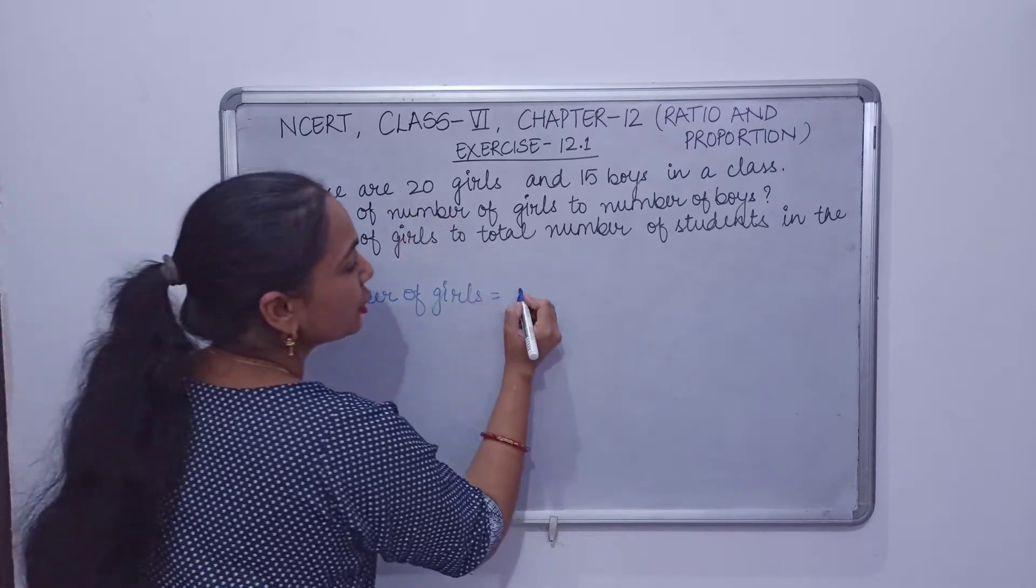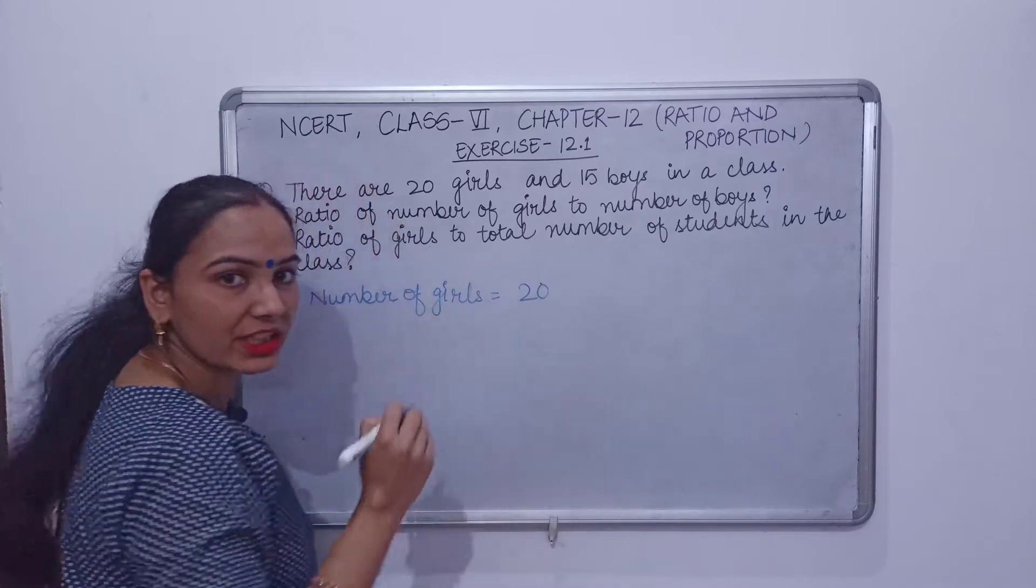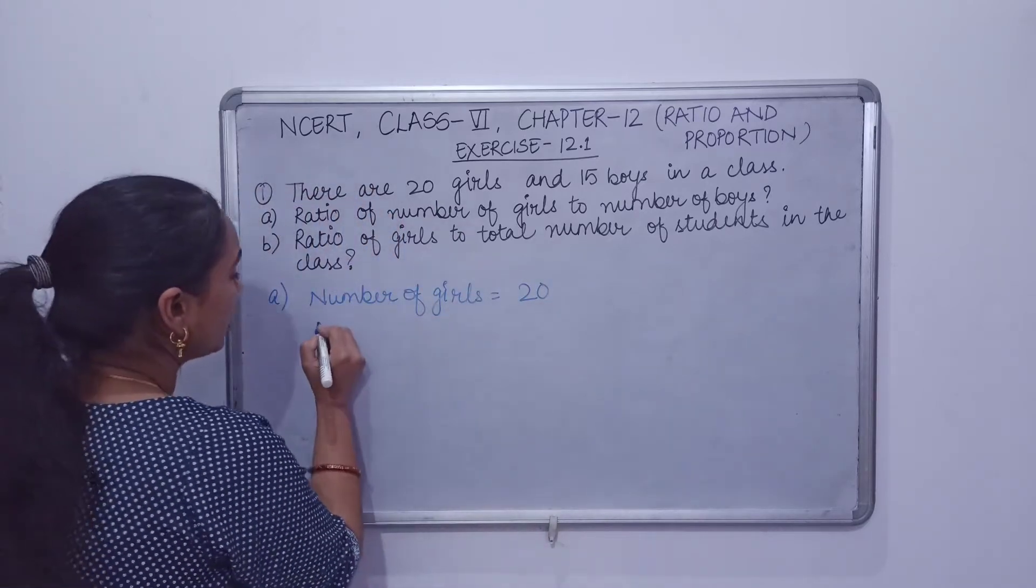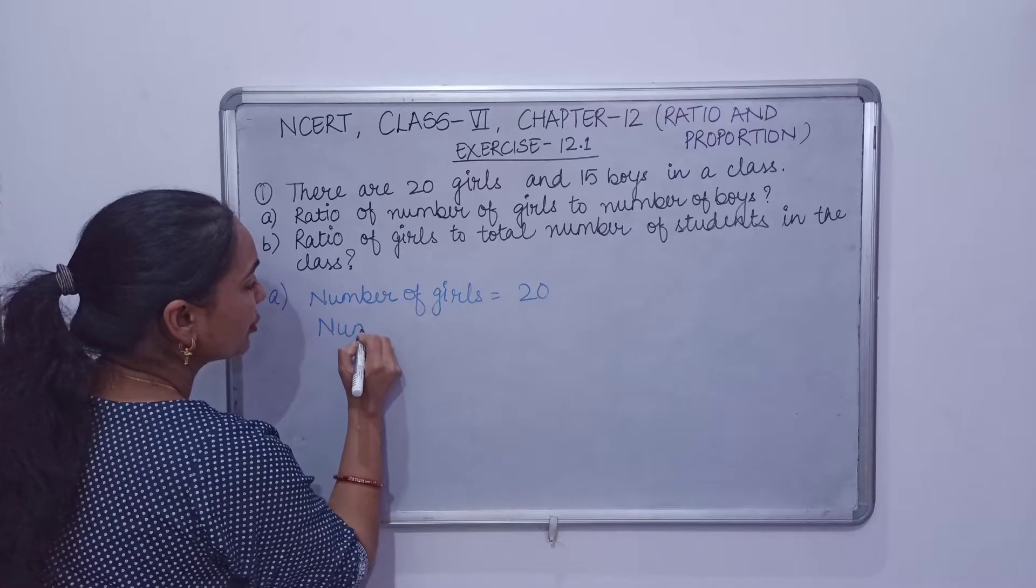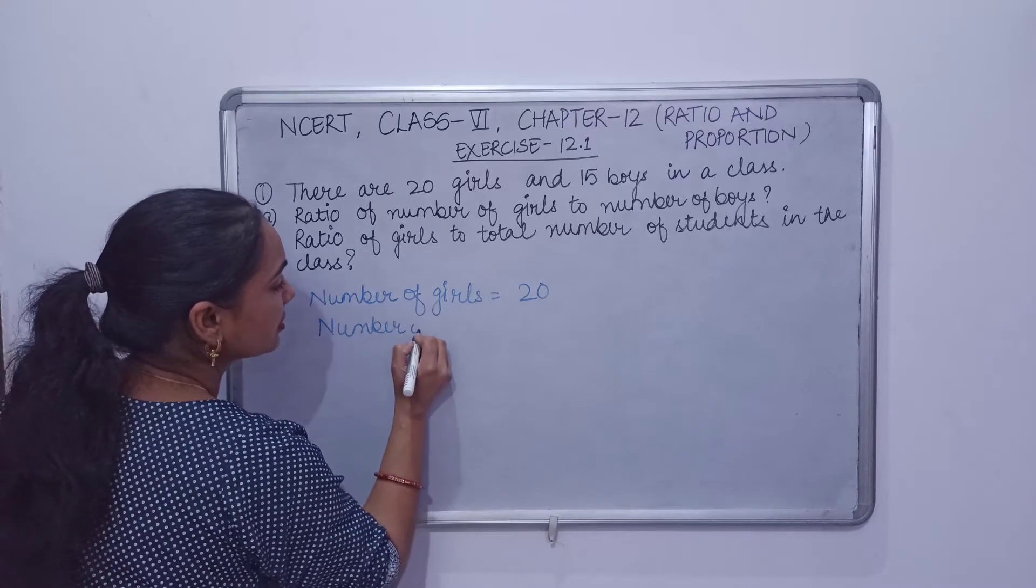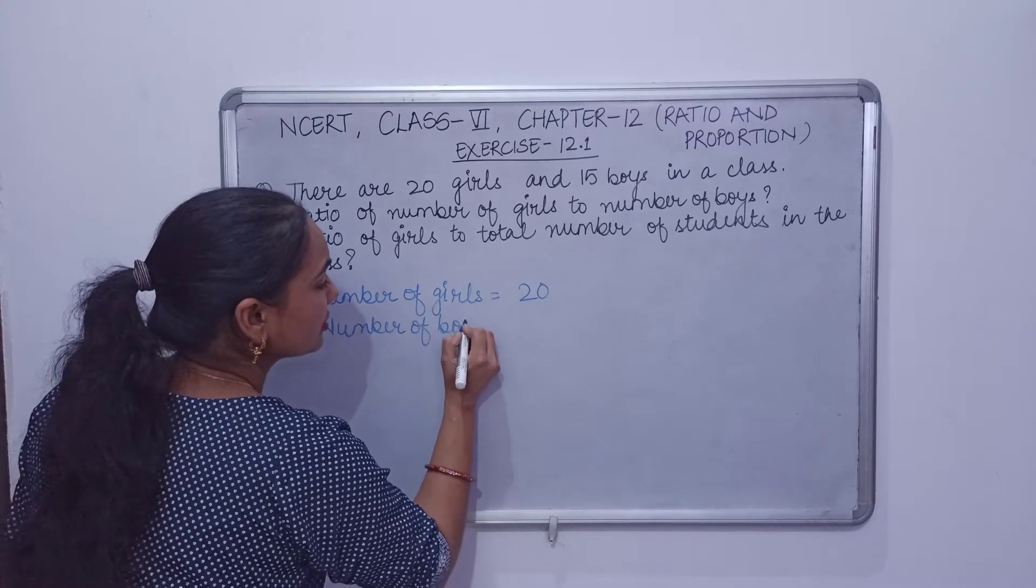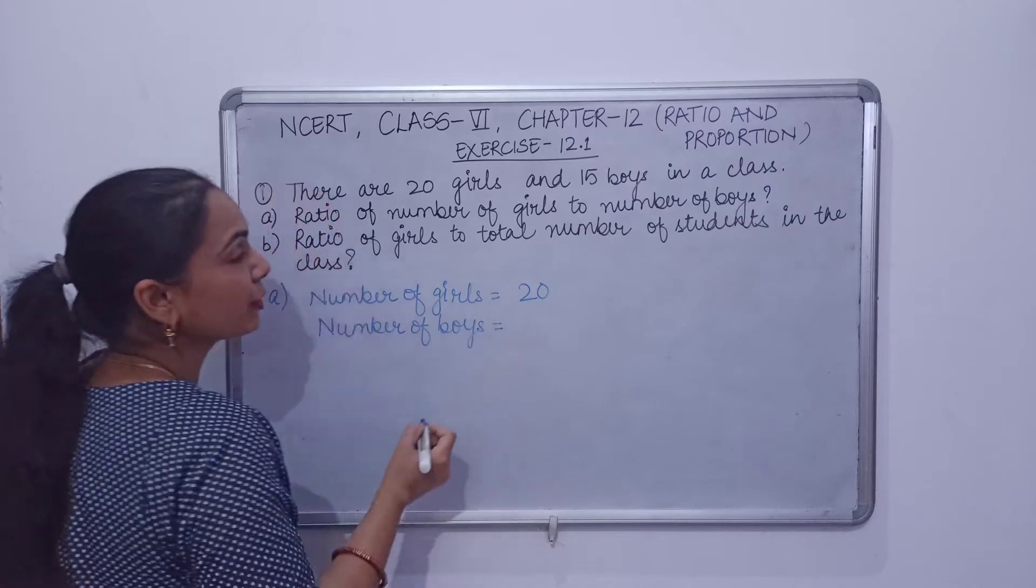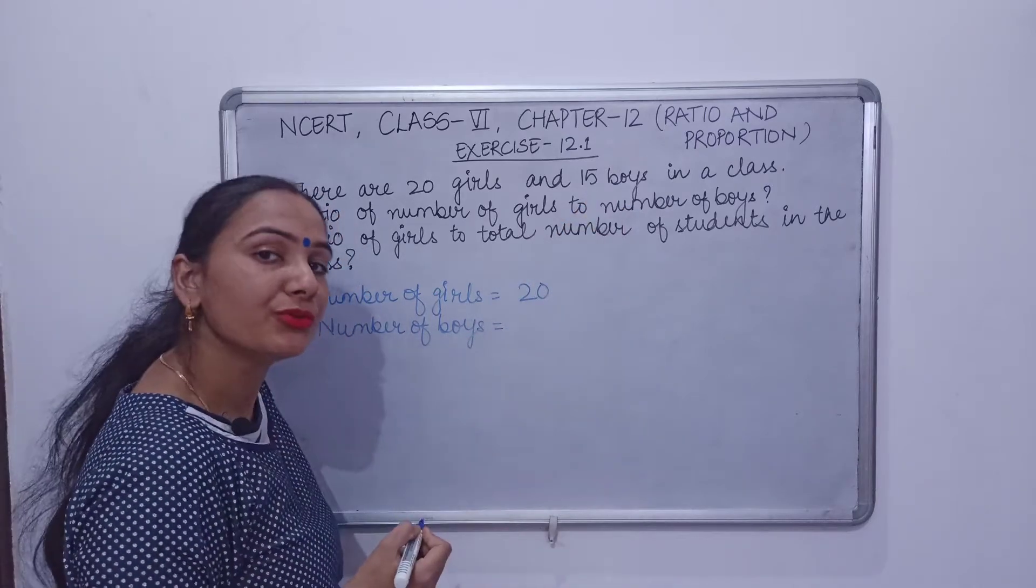Number of girls in class is 20, so we have written 20, right? Number of boys. Number of boys is given 15.